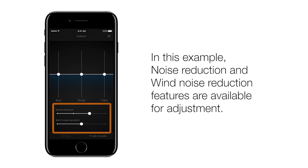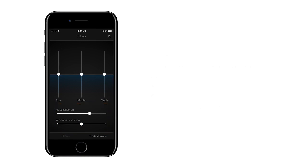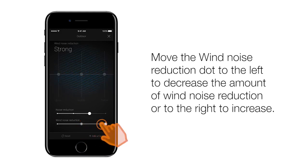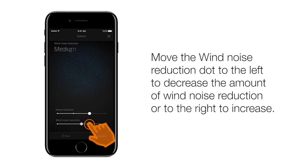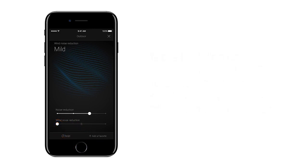A box appears around the sliding scales at the bottom labeled Noise Reduction and Wind Noise Reduction. Move the wind noise reduction dot to the left to decrease the amount of wind noise reduction, or to the right to increase. Slides the wind noise reduction dot to the right to strong, then back left one notch to medium, then all the way to the left to mild.